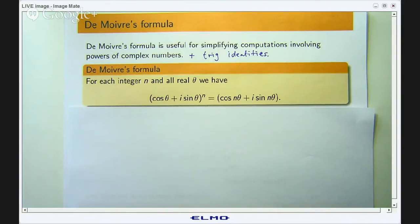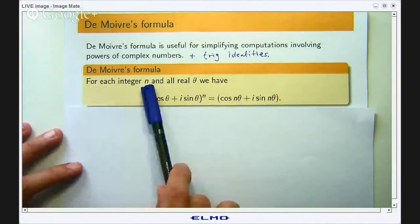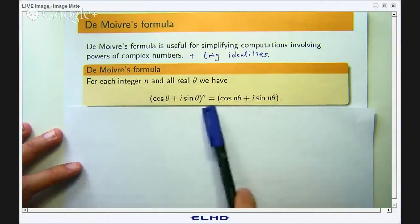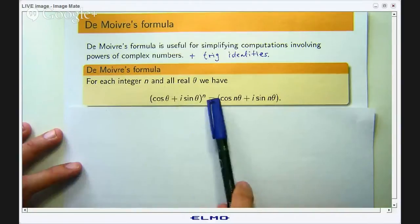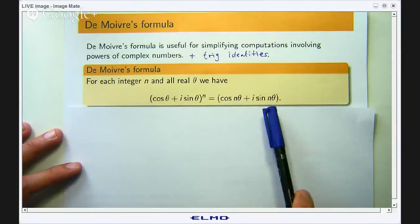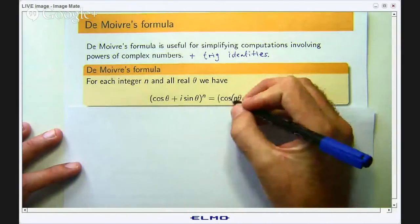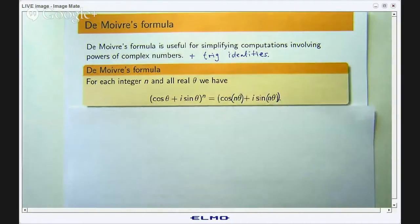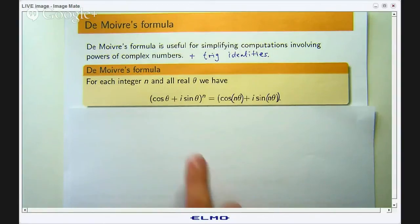So let us have a look at De Moivre's formula. It says the following relationship. For each integer n and all real values of θ, we have the following relationship: (cos θ + i sin θ)^n equals cos(nθ) + i sin(nθ). Now if you wanted to be a bit more pedantic you could put brackets around those nθ's. So I will show you a proof and then we can actually dissect this a little bit more.